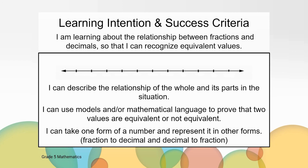As I read each of the success criteria for today, use the number line to reflect on where you are in your understanding. If you feel like you understand the success criteria, then you will rate yourself towards the right arrow. If you feel like you kind of got it, then you might be somewhere in the middle. And if you feel like you still need more time to practice, then you'll probably be closer to the left arrow. I can describe the relationship of the whole and its parts in the situation. I can use models and/or mathematical language to prove that two values are equivalent or not equivalent. I can take one form of a number and represent it in other forms — fraction to decimal and decimal to fraction.